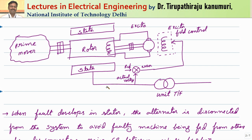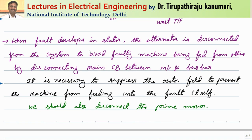For external faults, disconnecting the circuit breaker is sufficient. But for internal faults, only disconnecting the circuit breaker is not sufficient. Along with disconnecting the circuit breaker, we have to remove the excitation system as well as the prime mover. So whenever we want to disconnect the alternator, some associated equipment also needs to be disconnected so that there will be no further problem.